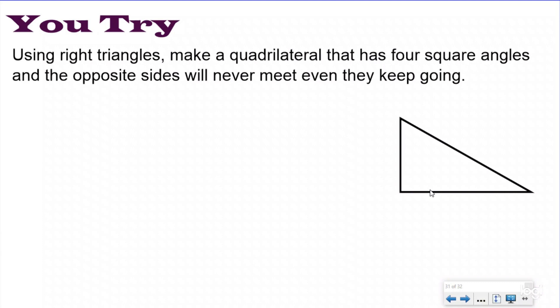Hopefully you just pushed pause and now you're checking your work. The first thing you should have done is highlight the attributes they wanted your shape to have. They're combining your attribute knowledge from previous lessons with your composing knowledge. We have four square angles and the opposite sides will never meet even if they keep going. These two attributes are attributes of a rectangle or square, which means I need to take my right triangles and make a rectangle or square.